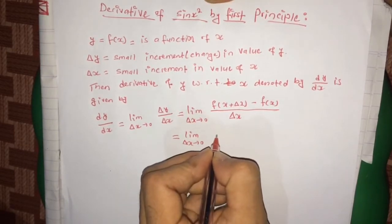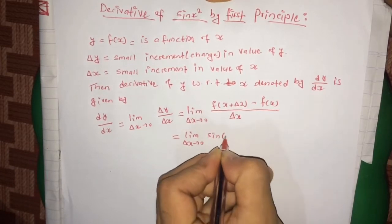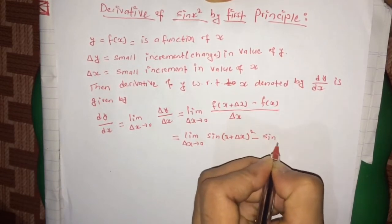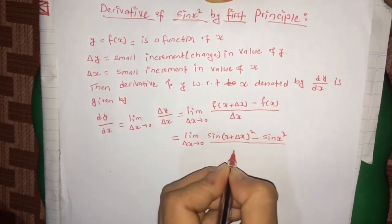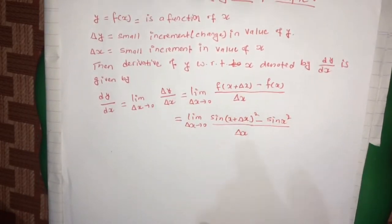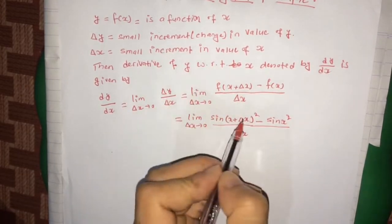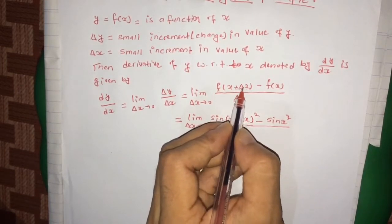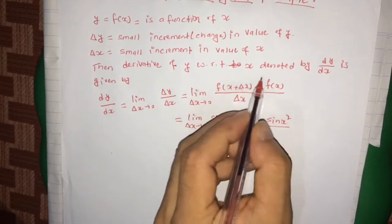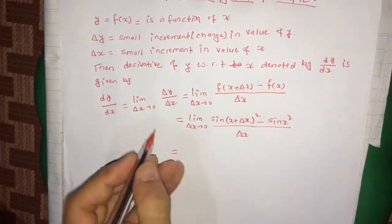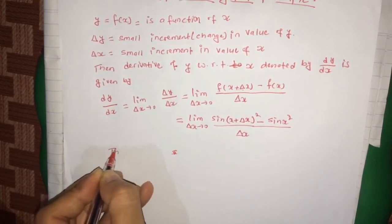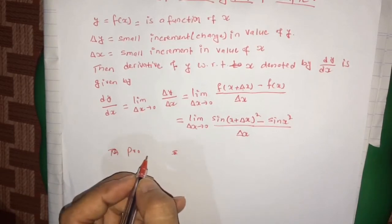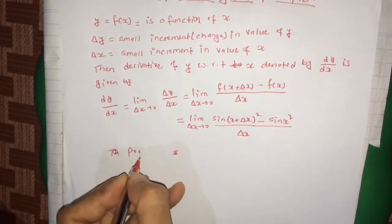In place of f(x + Δx) we write sin(x + Δx)², and in place of f(x) we write sin(x²), divided by Δx. This is because the given function f(x) is sin(x²). So dy/dx = limit as Δx tends to 0 of [sin(x + Δx)² − sin(x²)] / Δx.